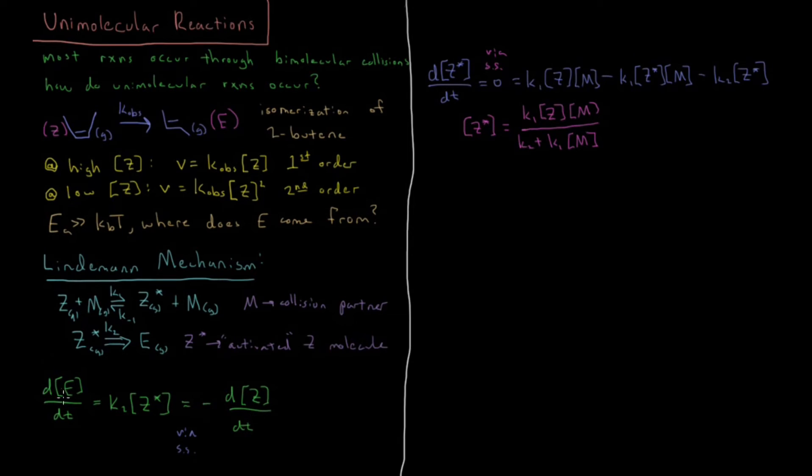If we substitute in our concentration of Z star into dE/dt, we'll get the term that dE/dt, which is equal to minus dZ/dt, equals K1 times K2 times Z times M over K2 plus K-1 times M. That is equal to dE/dt, which equals minus dZ/dt.